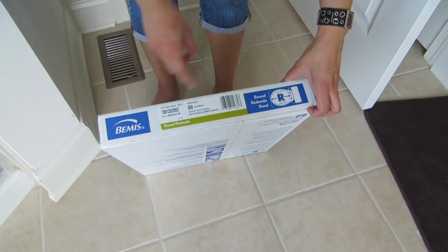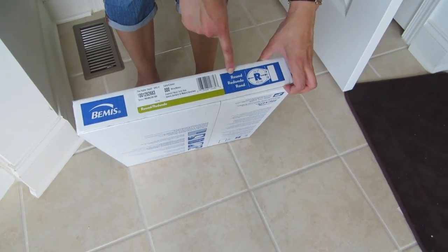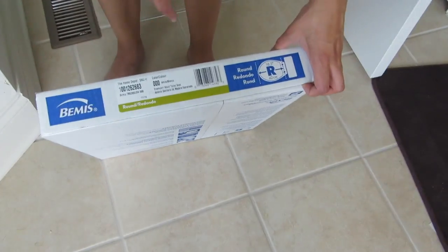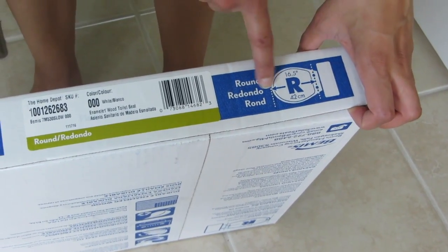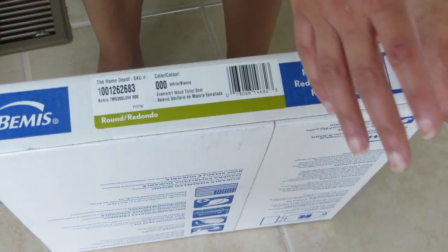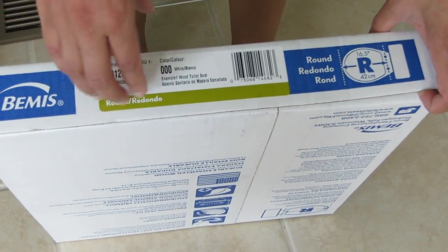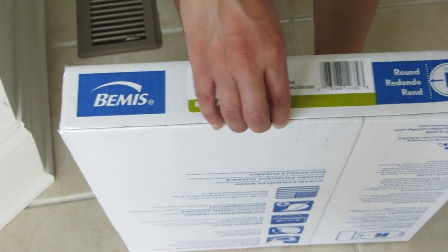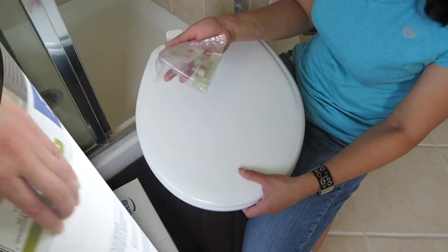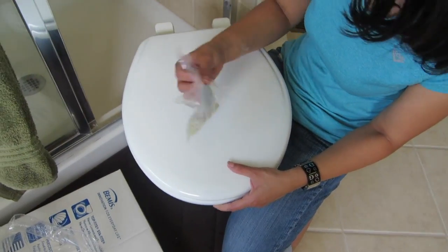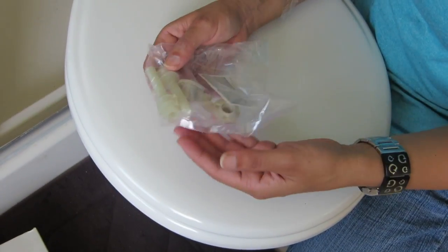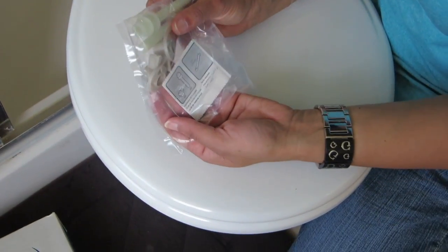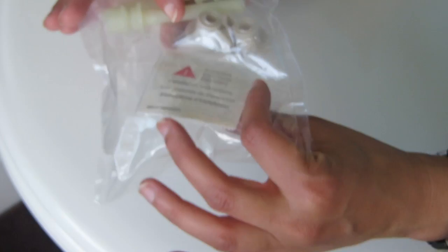So this is a toilet seat that I bought. It's a round white toilet seat, 16 and a half inches. I measured the top of the lid and it was around 16, so I bought this one. The longer ones are 18 inches. So I need the smaller one, so this is the one I got. This is what the toilet seat looks like and it came with pretty much the same screws as the original toilet seat.